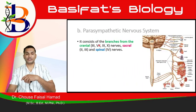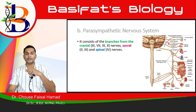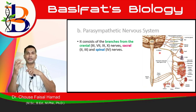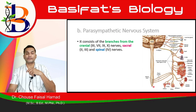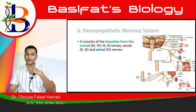The cranial nerves come from the cranium and connect to their respective organs. The sacral region includes S2, S3, and S4 of the spinal cord, which contribute to the parasympathetic outflow. The cranial component and sacral component together form the craniosacral outflow of the parasympathetic nervous system.